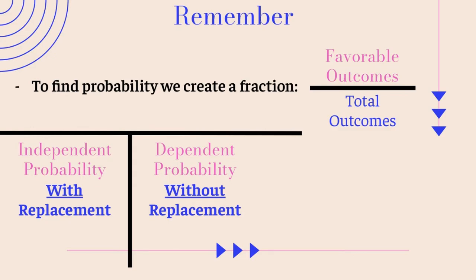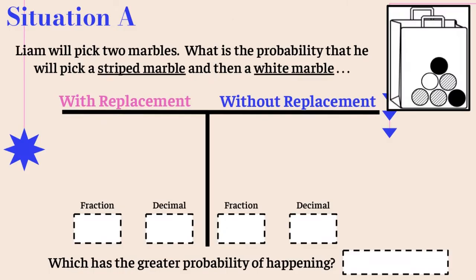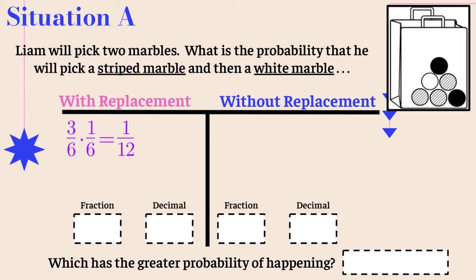Let's look at situation A. Liam will pick two marbles. What is the probability that he will pick a striped marble and then a white marble? We have two scenarios — with replacement and without replacement. For with replacement, there are three striped marbles, so three out of six. Then he puts it back, and there's one white marble out of six.